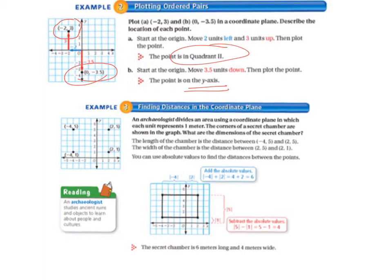Example 3, finding distances in the coordinate plane. An archaeologist divides an area using a coordinate plane in which each unit represents 1 meter. The corners of a secret chamber are shown in the graph. What are the dimensions of the secret chamber? The length of the chamber is the distance between negative 4, 5 and 2, 5. The width of the chamber is the distance between 2, 5 and 2, 1. You can use absolute values to find the distances between the points.